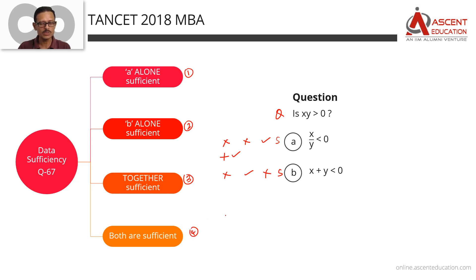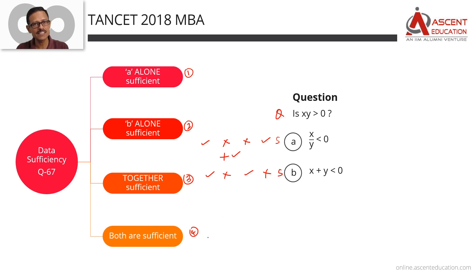Answer option 4: if both statements are sufficient — meaning A alone is sufficient and B alone is also sufficient, each statement is independently sufficient — then we go with answer option 4.